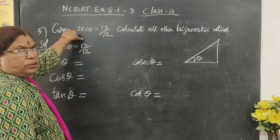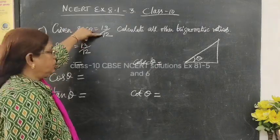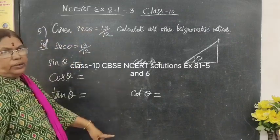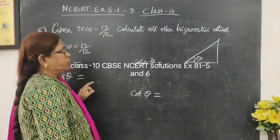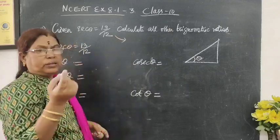Now we see the second question, question number 5: secant theta equals 13 by 12. You want to find all other trigonometric ratios. So secant theta is formed. Secant theta is the reciprocal of cos theta.